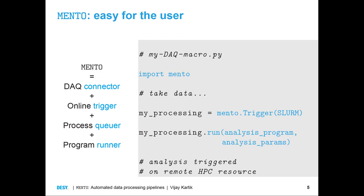We try to compress all that into essentially a three-step process for the user. So if I'm a user coming to the beamline and want to write my acquisition recipe, all I need to do is get the package, create a trigger — in this case using Slurm, or it could be a local trigger for visualization — and then say this is the program I want to run for my analysis, and these are the parameters I want to use.